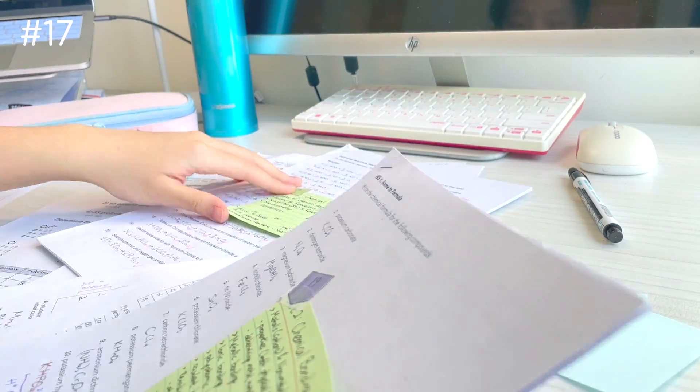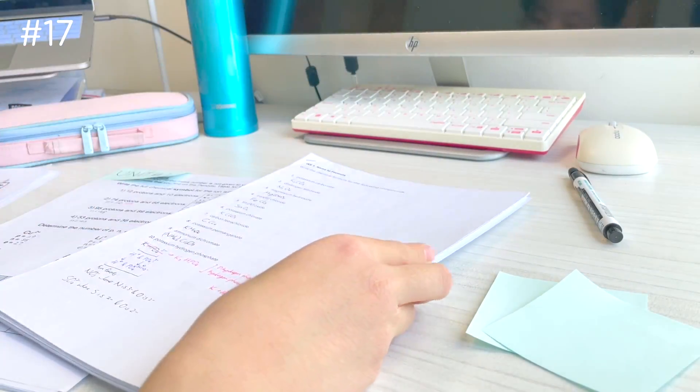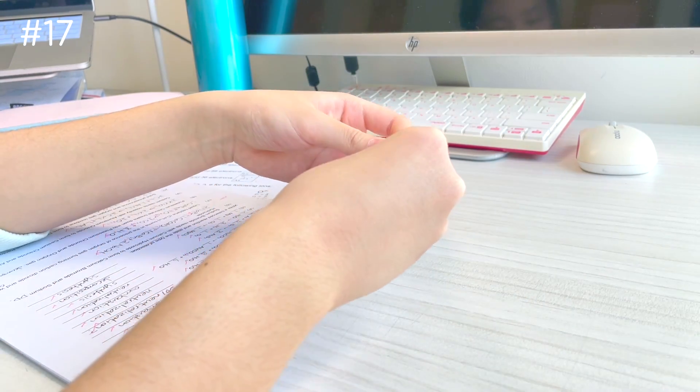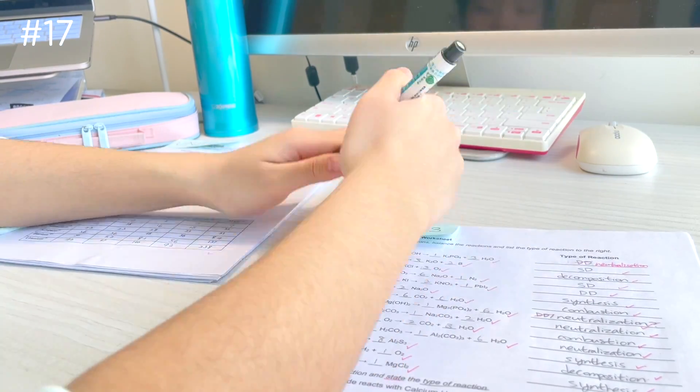If you have a lot of paper from a project, unit, test, or at the end of the year, batch them. Orient the sticky side of the sticky note sideways, stick it on, then carefully fold it backwards. Add a title and your teacher will call you organized.